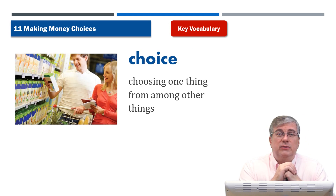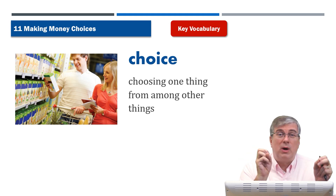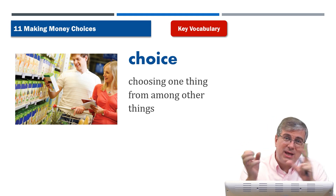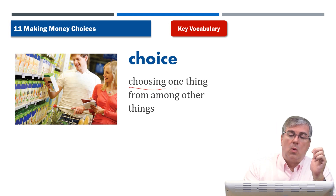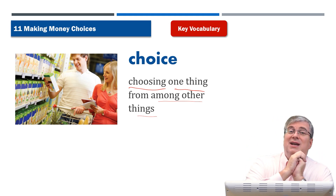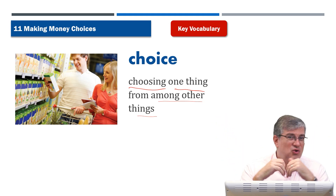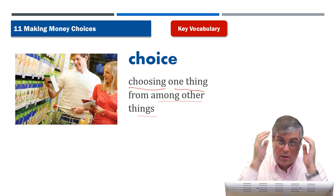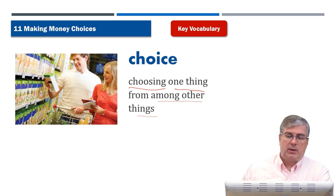Next, 'choice' means to make a decision — do I want this or do I want that? You have to make a decision: which one will you buy, which one will you eat, which one will you use? It's choosing one thing from among other things. And it's not just two things — sometimes it could be 10 or 20 different things. You go into a supermarket and there are 20 different brands of milk. Which one do you buy? You have to make a decision and choose one.